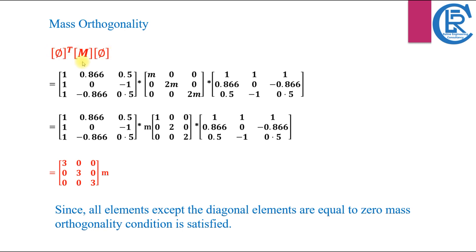The matrix multiplication is straightforward and can be accomplished with an engineering calculator. If all the off-diagonal elements of the resulting matrix are nearly equal to zero, we have successfully satisfied the orthogonality condition. While it is not always possible to obtain exact zeros due to numerical precision, values close to zero indicate fulfillment of the condition. In our problem, the mass orthogonality condition is satisfied.